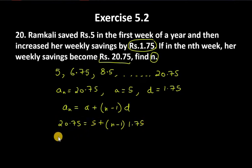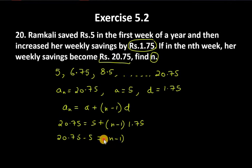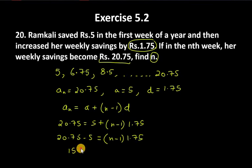So it will be: 20.75 minus 5 equals (n minus 1) into 1.75. Now, 20.75 minus 5 is 15.75, and this equals (n minus 1) into 1.75.